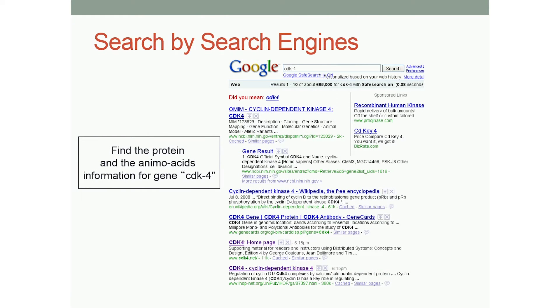So if we want to look for something, currently we go to a search engine such as Google, and we have to guess the best keywords that hopefully represent our question well. For example, I'm interested in a gene called CDK4. I put CDK4 into Google and it returned more than 600,000 links. In order to find the information I'm looking for, I still have to click links one by one and read through documents. This keyword-based searching can be ambiguous — natural language by itself is ambiguous.